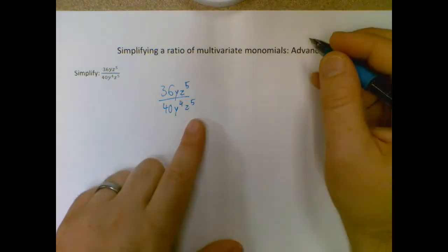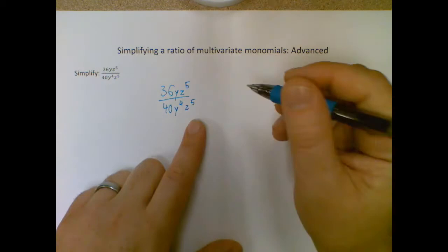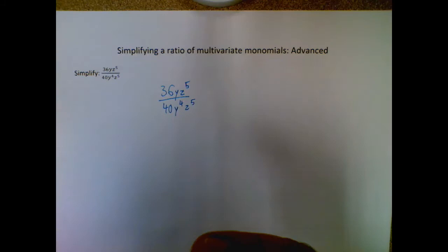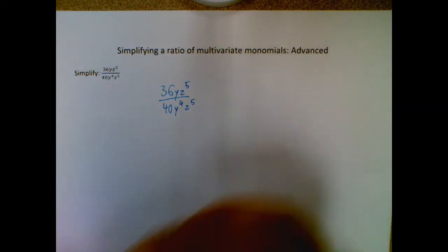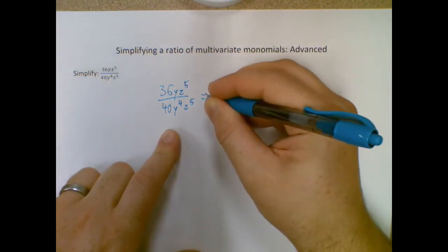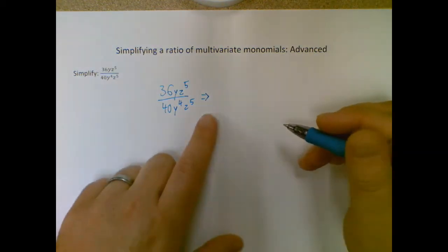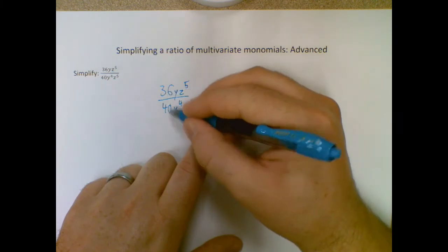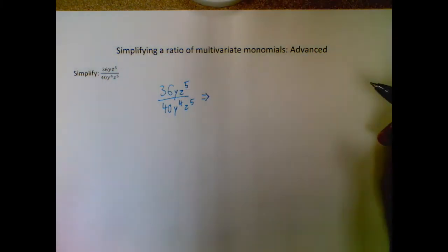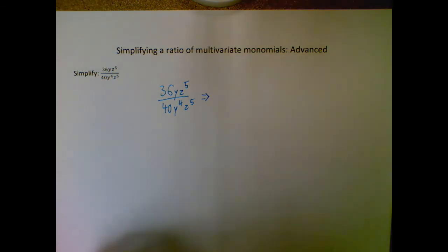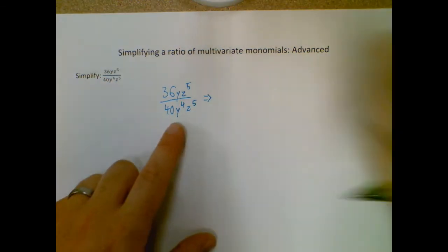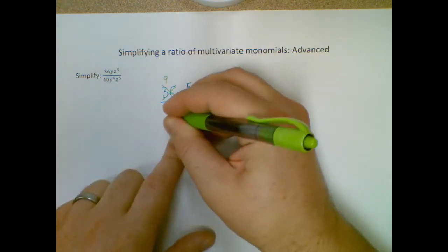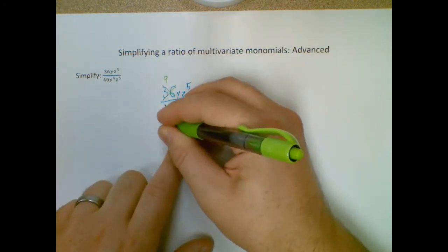Looking at this, when we have these higher exponents here, I personally like to do my whole division separately, but we're going to go with the more classic one where I'm just going to reduce. Looking at these, I have 36 and I have 40, so I'm going to reduce both of those by 4. So 36 divided by 4 is 9, and 40 divided by 4 is 10.